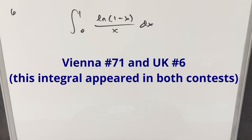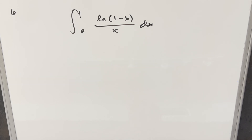We have a good one today from the UK Integration Bee, sample problem number six. We have the integral from zero to one of natural log of (1 minus x) over x dx. This is what I did previously and I just wanted to do an alternative method on this one.